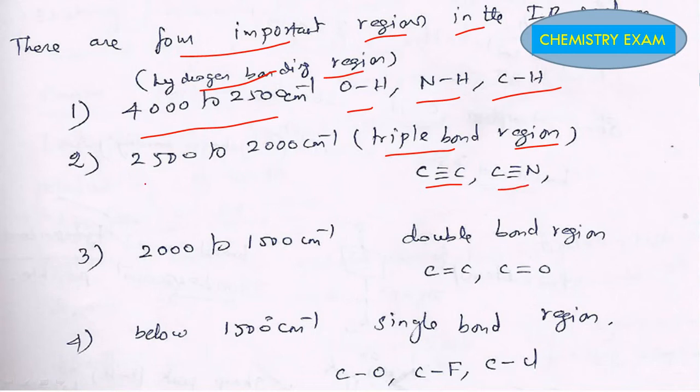Next, double bond region C=C, C=O from 2000 to 1500 cm^-1. And below 1500 cm^-1 is the single bond region: C-O, C-F, C-C, C-Cl. Suppose here symmetry like C≡C like this.